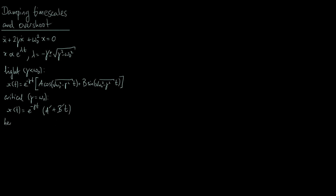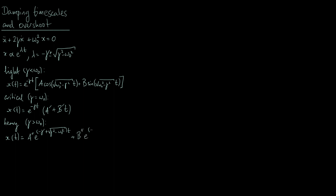The heavy damping case is when gamma is greater than omega-naught. Lambda is then purely real with two distinct values, so the solution is: some constant A-double-prime times e to the minus gamma plus square-root of gamma-squared minus omega-naught-squared, all times t, plus another constant times e to the minus gamma minus that same square root, times t.